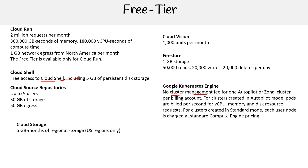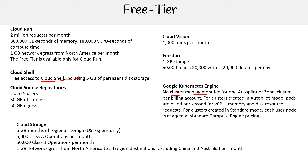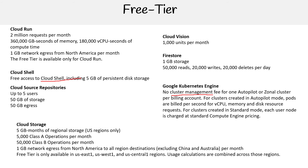For Cloud Storage, you get five gigabytes per month of regional storage — pretty good, but only for the US region. You also get 5,000 Class A operations per month, 50,000 Class B operations per month, and one gigabyte of network egress from North America to all region destinations, excluding China and Australia, per month. The free tier is only available in US-East1, US-West1, and US-Central regions, and usage calculations are combined across those regions.